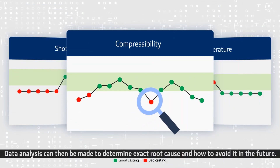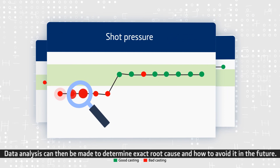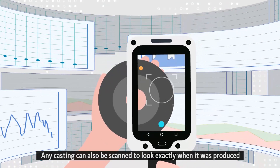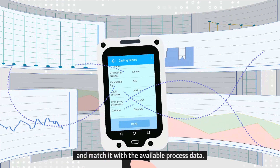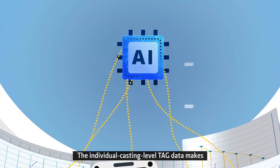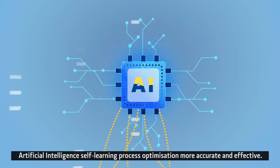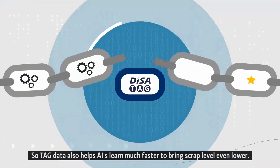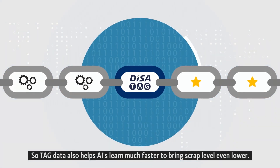Data analysis can then be made to determine the exact root cause and how to avoid it in the future. Any casting can also be scanned to look exactly as it was when it was produced and match it with the available process data. The individual casting-level TAG data makes artificial intelligence self-learning process optimization more accurate and effective, helping AIs learn much faster to bring the scrap level even lower.